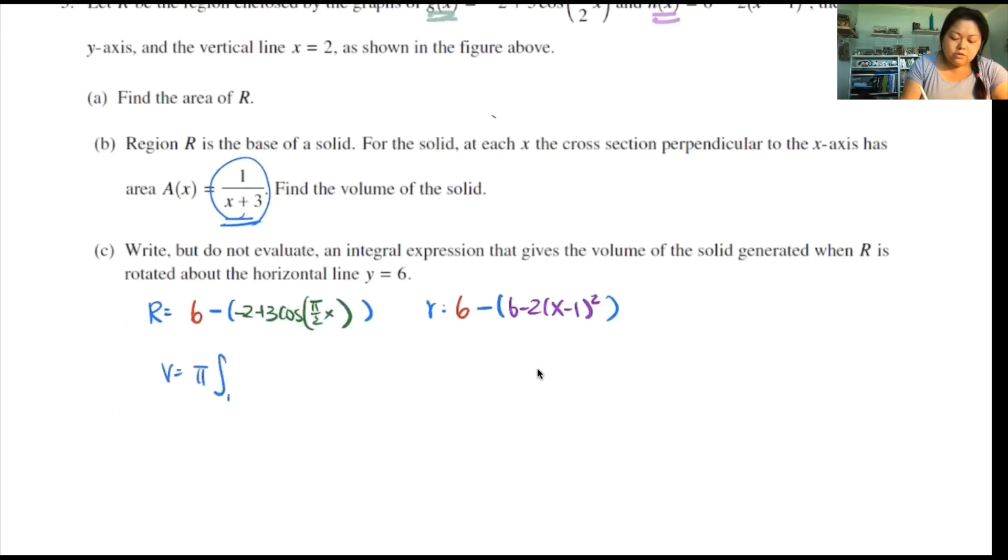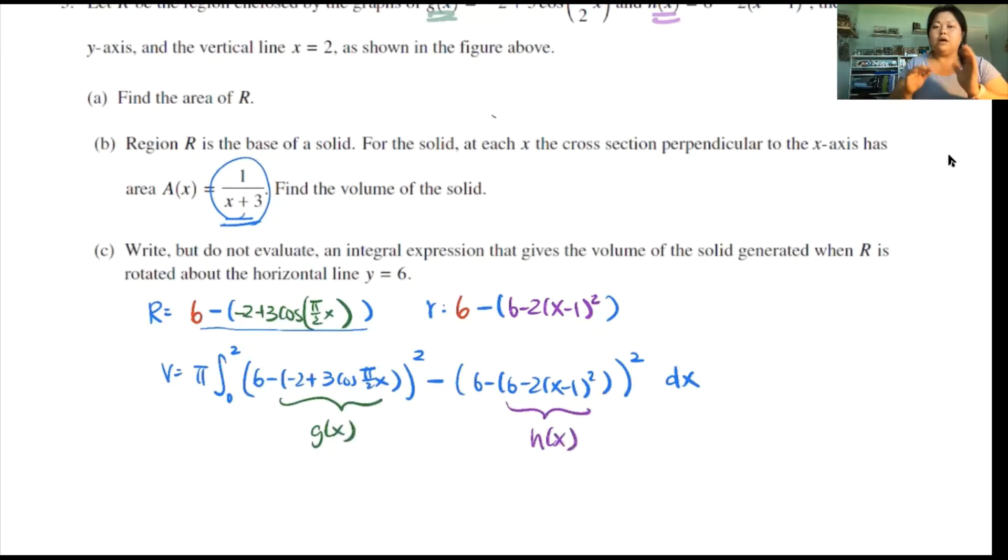So those are my radii. So you can clean it up or you can leave it as this, really up to you because it says you don't have to evaluate. So the volume of this is washer. So it's pi integral from 0 to 2, big radius. So this whole thing, 6 minus negative 2 plus 3 cosine of pi over 2x, whole thing squared, minus little radius, 6 minus 6 minus 2(x minus 1) squared, whole thing squared, and then dx. In the interest of making sure you don't clean up too much and mess up your answer, I would suggest you leave it like this because this is totally fine. Again, just keep in mind that this was your g(x) and this was your h(x). So you kind of keep track of where all the functions went. That's it for this problem.